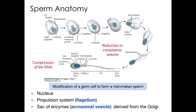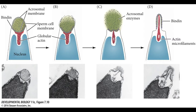Another modification that helps make the sperm better suited to its function — which is largely delivering genetic material to the oocyte — is the formation of the acrosomal vesicle. That's a sac of enzymes derived from the Golgi apparatus, located at the very tip of the sperm. When the sperm makes contact with the egg, the acrosomal contents are released to help the sperm digest a path through the extracellular coating of the egg.